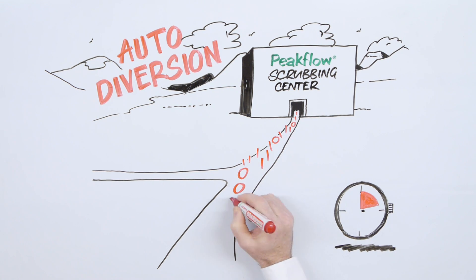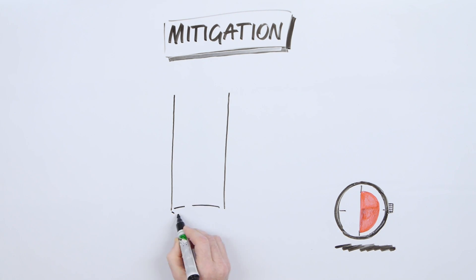At this stage, the Peak Flow Threat Management System will automatically start to surgically mitigate or block only the attack traffic, while seamlessly allowing legitimate traffic to continue on to its original destination.